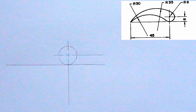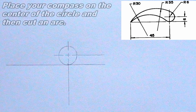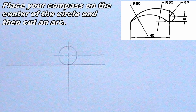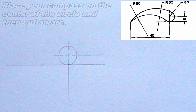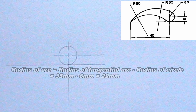Now it is time to produce the tangential arcs. To produce the top tangential arc, I will place my compass on the center of the circle, then I will cut an arc. The radius of my compass should be the radius of the tangential arc minus the radius of the circle. In this problem, the radius of the tangential arc is 35mm and the radius of the circle is 6mm, so the radius of my compass will be 35 minus 6, which is 29mm.